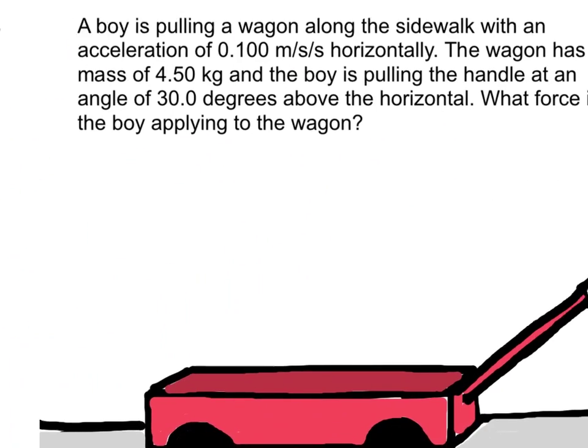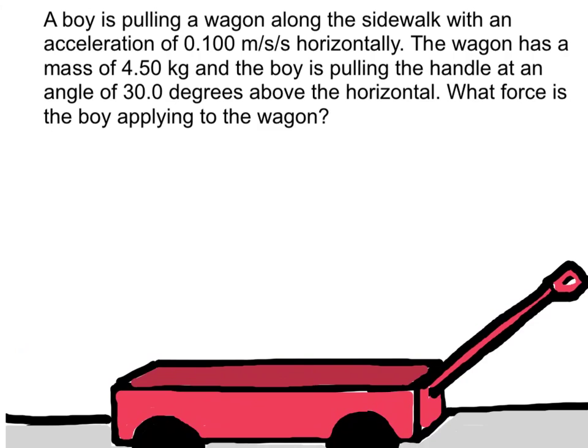Okay, let's try a bit of a tougher problem. This problem says a boy is pulling a wagon along a sidewalk with an acceleration of 0.1 meters per second horizontally. The wagon has a mass of 4.5 kilograms and the boy is pulling the handle at an angle of 30 degrees above the horizontal. What force is the boy applying to the wagon?